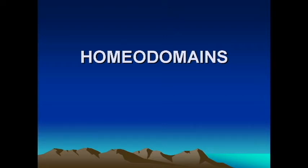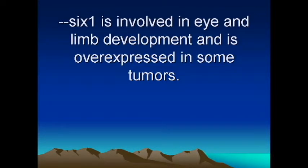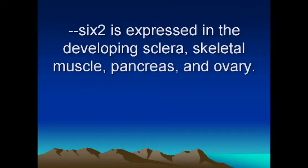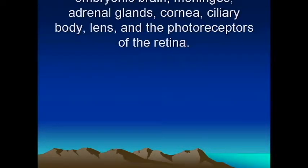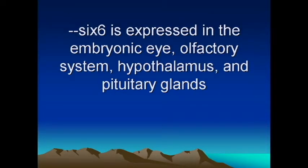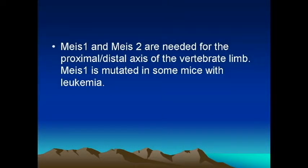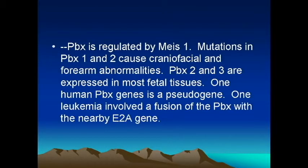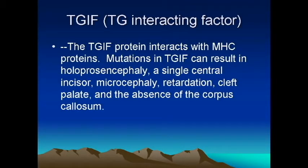Among the helix-turn-helix transcription factors, there is a large family known as the homeodomain transcription factors, so-called because they share a region of about 60 amino acids which is highly conserved. This area is known as the homeodomain, and thus all proteins which have it are referred to as homeodomain transcription factors. There are about 2,000 of these known in eukaryotes, and mammals such as humans may possess almost 200 of these in their genome.